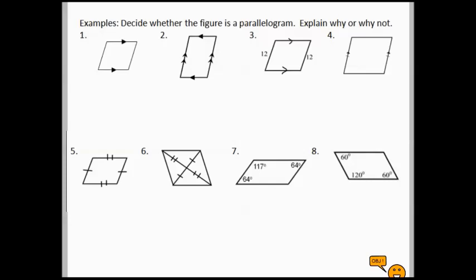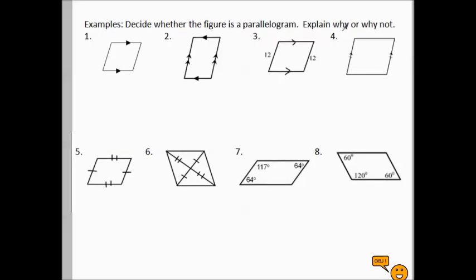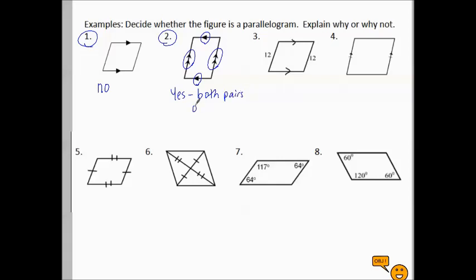Let's practice using these properties — decide whether the figure is a parallelogram and explain why or why not. Look at pictures one and two together. Both show parallel sides, but one is not a parallelogram. The first one is not a parallelogram because only one pair of opposite sides is parallel. The second one is yes because both pairs of opposite sides are parallel. You need to be able to recite that explanation.